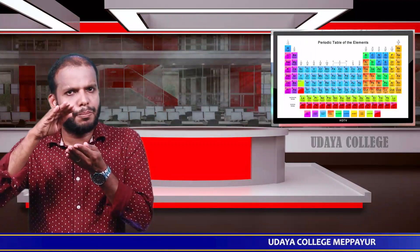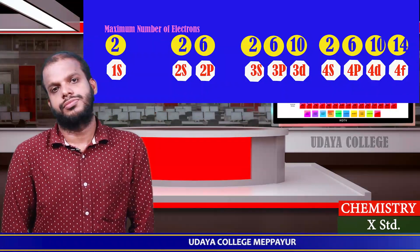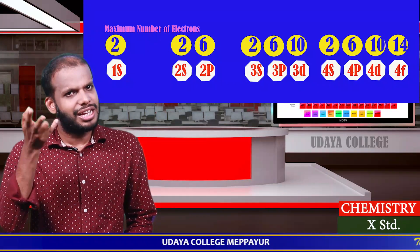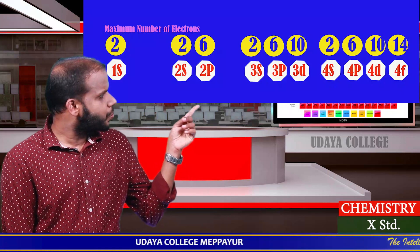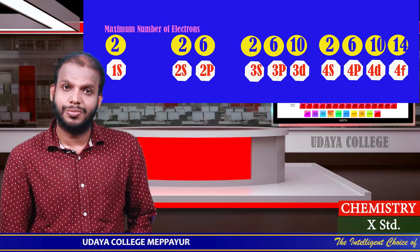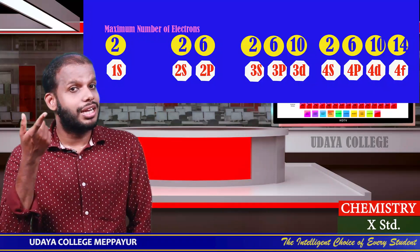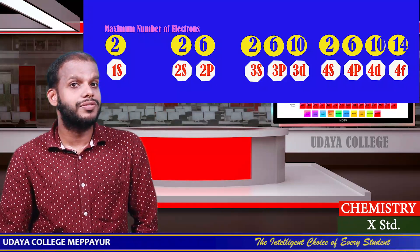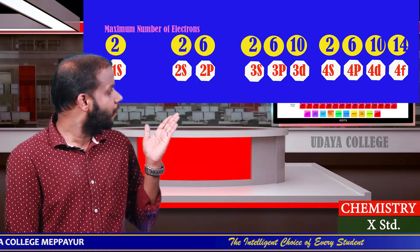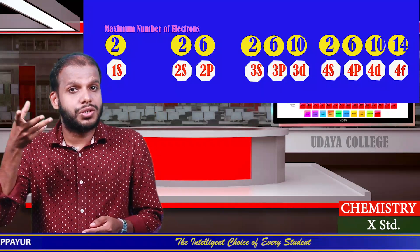K shell has sub-shell 1s. L shell has sub-shells 2s and 2p. M shell has sub-shells 3s, 3p, and 3d. N shell has sub-shells 4s, 4p, 4d, and 4f. Every s sub-shell holds a maximum of 2 electrons, every p holds 6, every d holds 10, and every f holds 14.